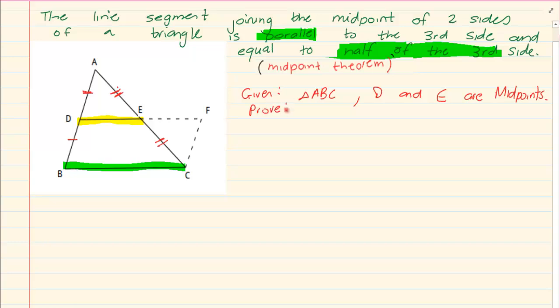What do they want us to prove? They want us to prove that DE is parallel to BC and they also want us to prove that DE is equal to half of BC.